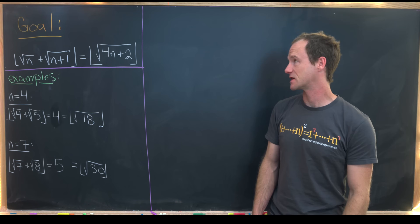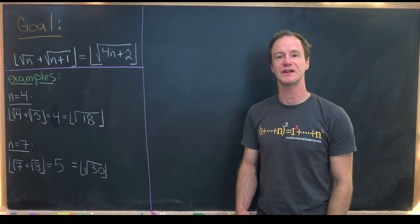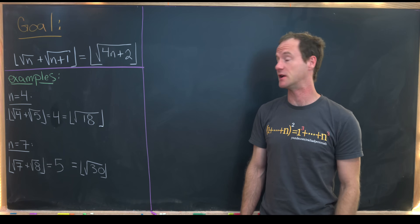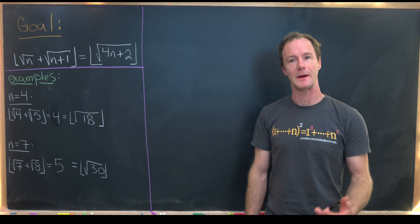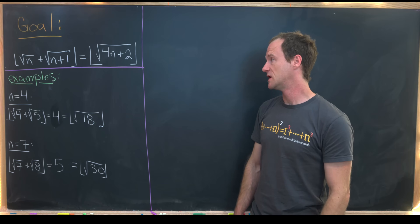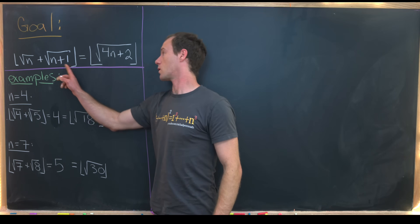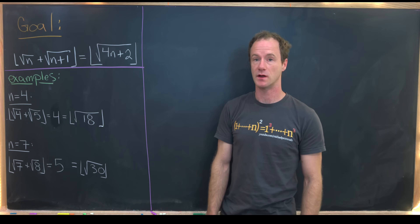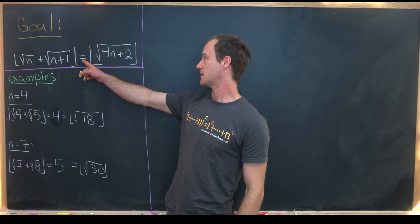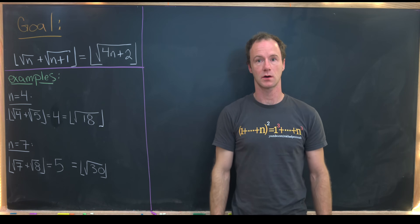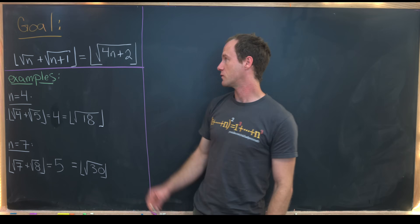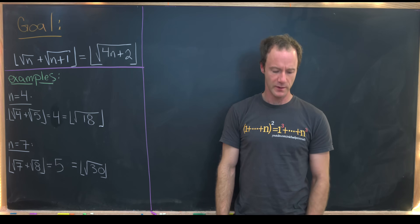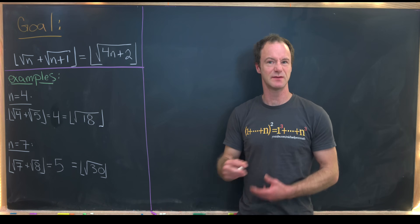Here we've got a nice classic problem involving the floor function and some square roots. Our goal is to show that the floor of the square root of n plus the square root of n+1 is the same thing as the floor of the square root of 4n+2. Before we get started, let's look at some quick examples just to make sure that this makes sense.